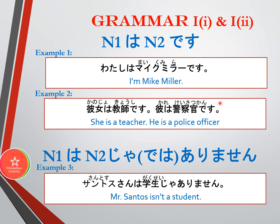It's important to make sure that both the first noun and the second noun in the sentence structure are indeed nouns. It cannot be an adjective here — there have to be two nouns.